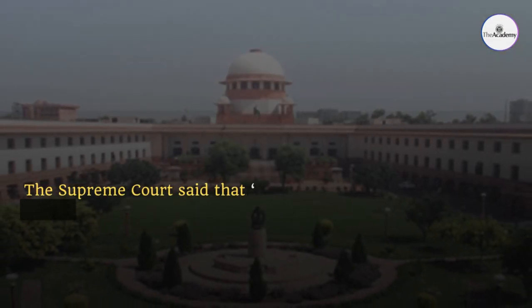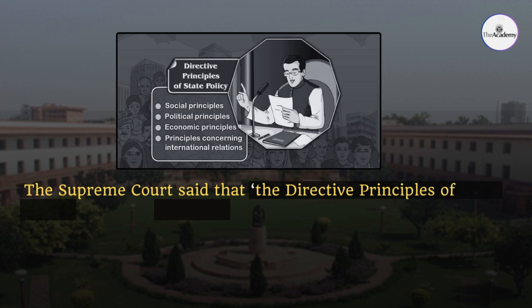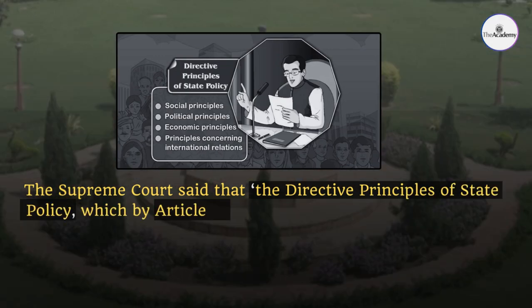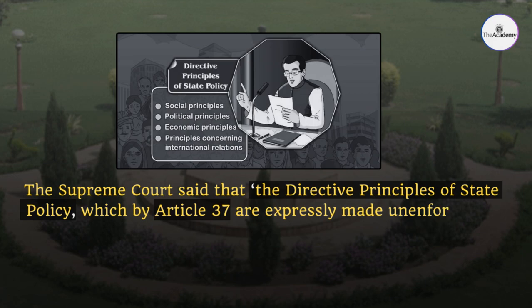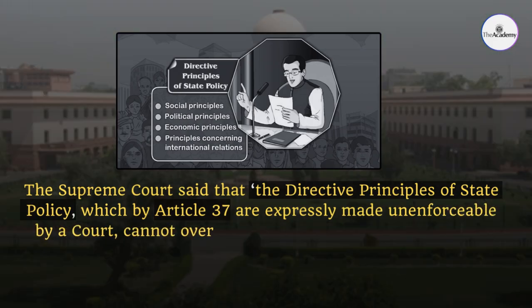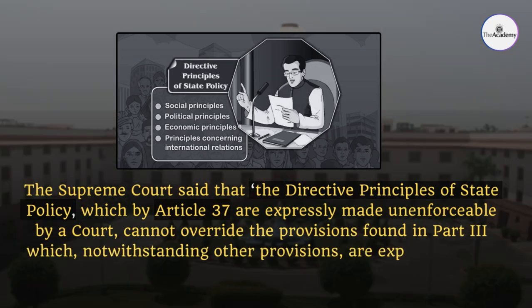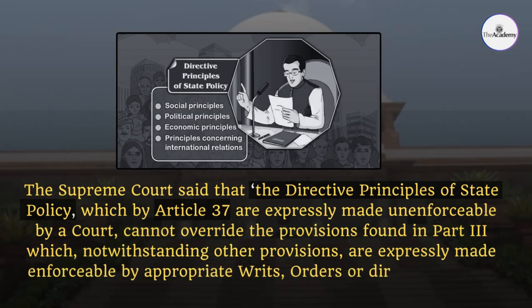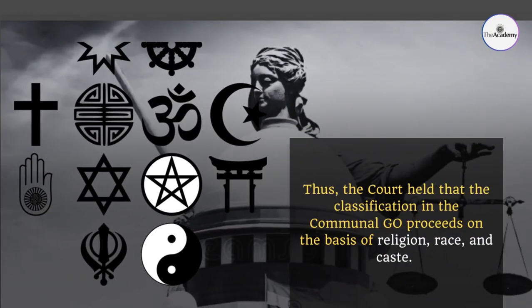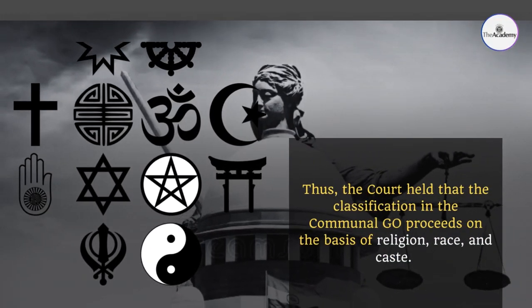The Supreme Court said that the directive principles of state policy, which by Article 37 are expressly made non-enforceable by a court, cannot override the provisions found in Part 3, which are expressly made enforceable by appropriate rights, orders, or directions under Article 32. Thus, the Court held that the classification in the communal GO proceeds on the basis of religion, race, and caste.